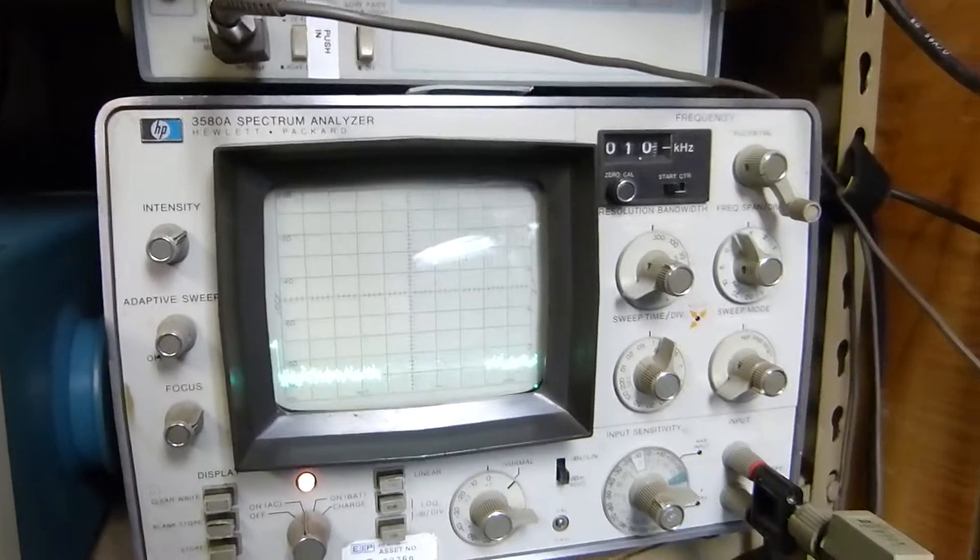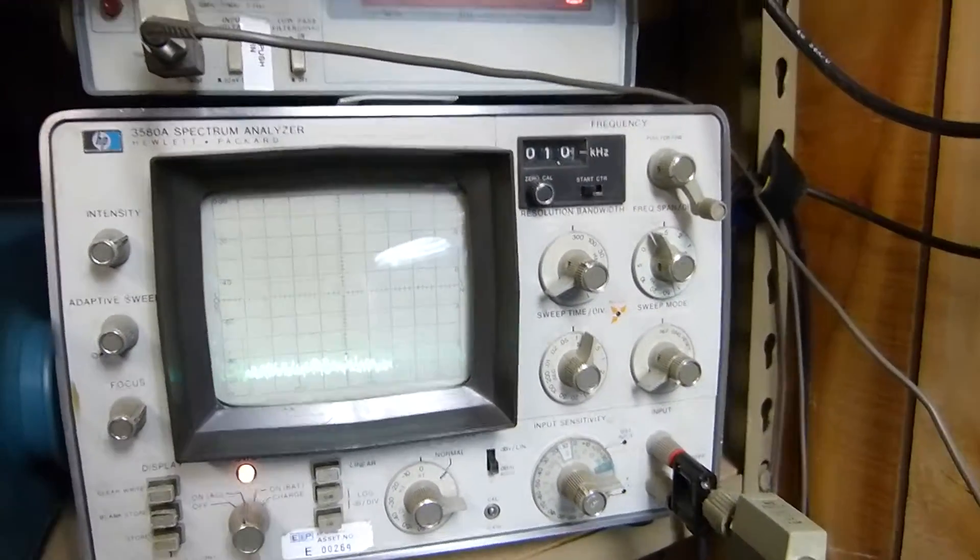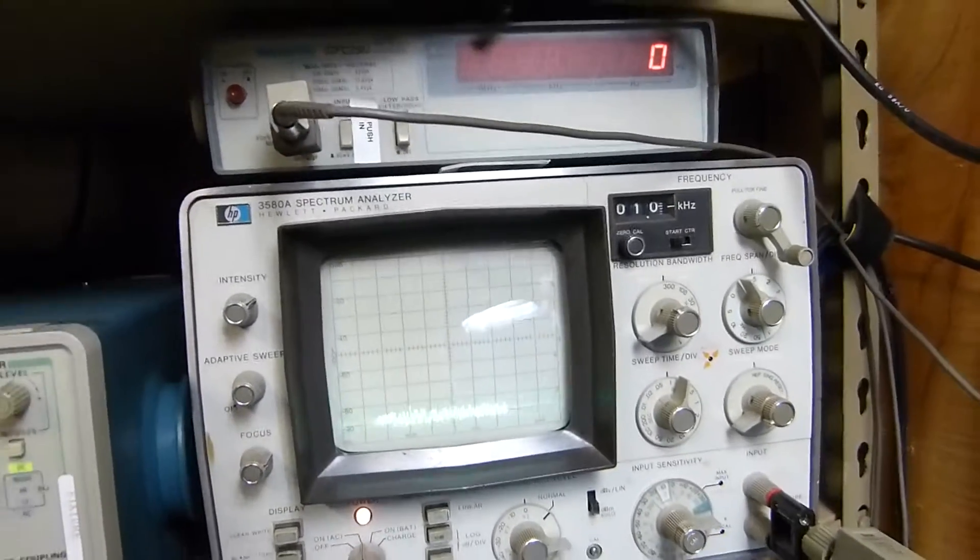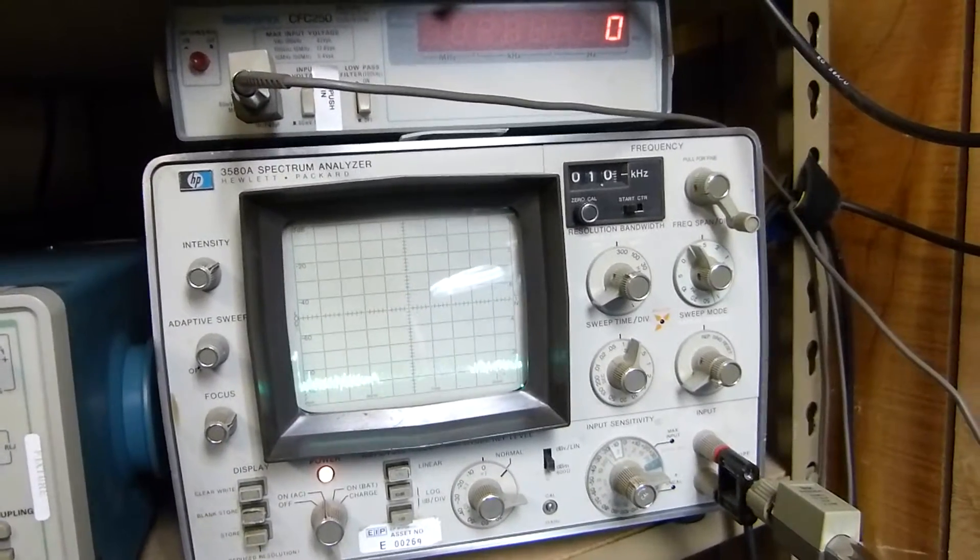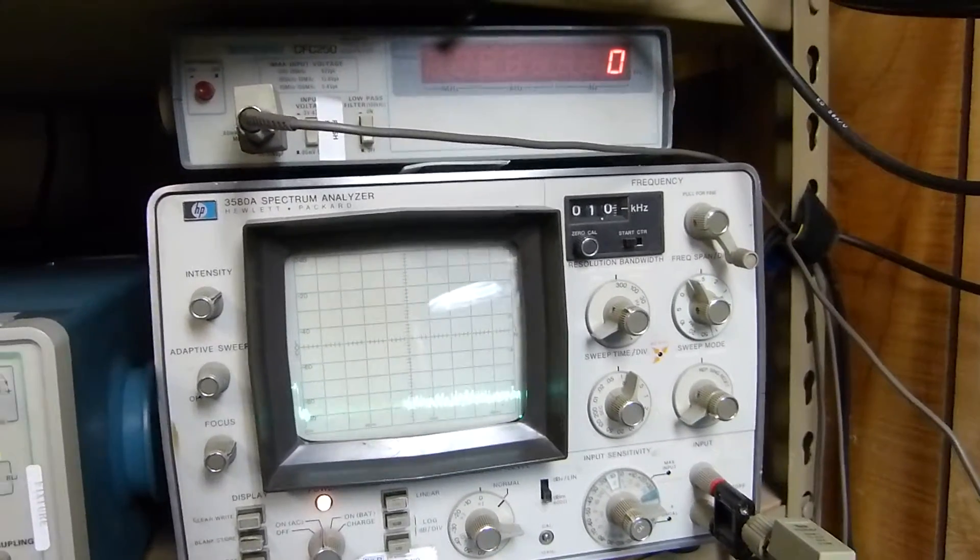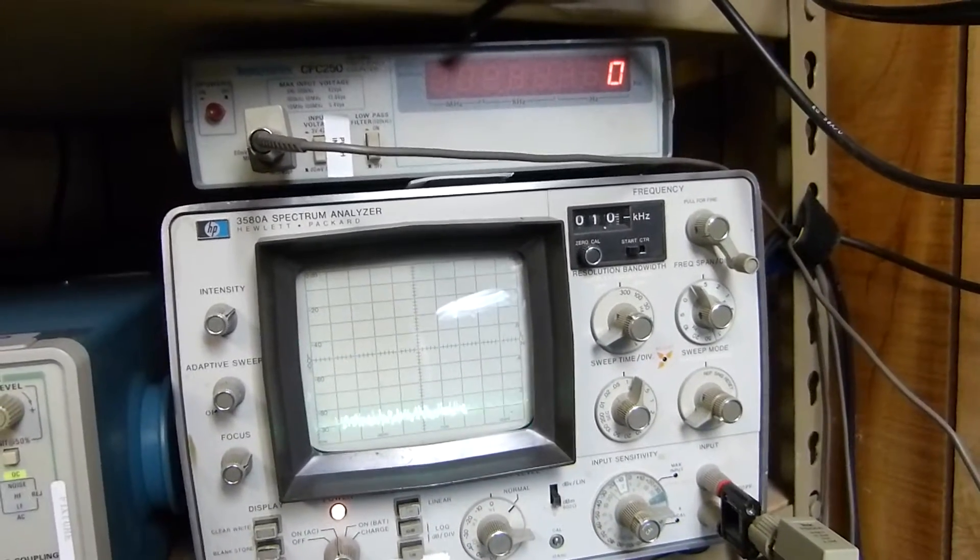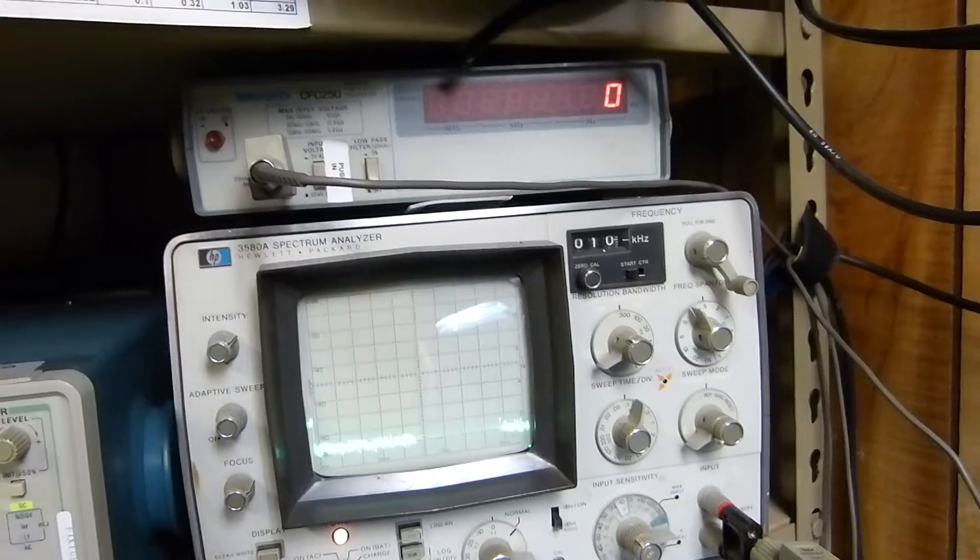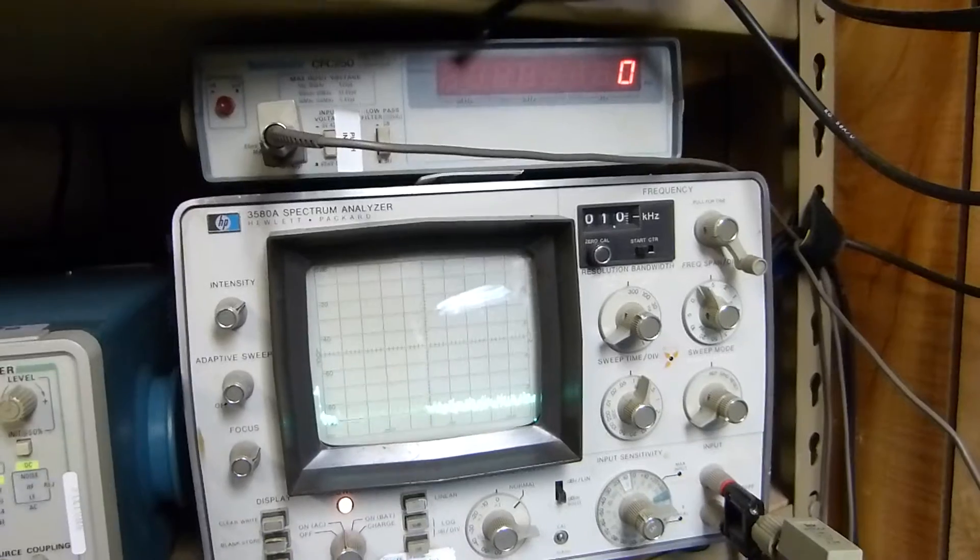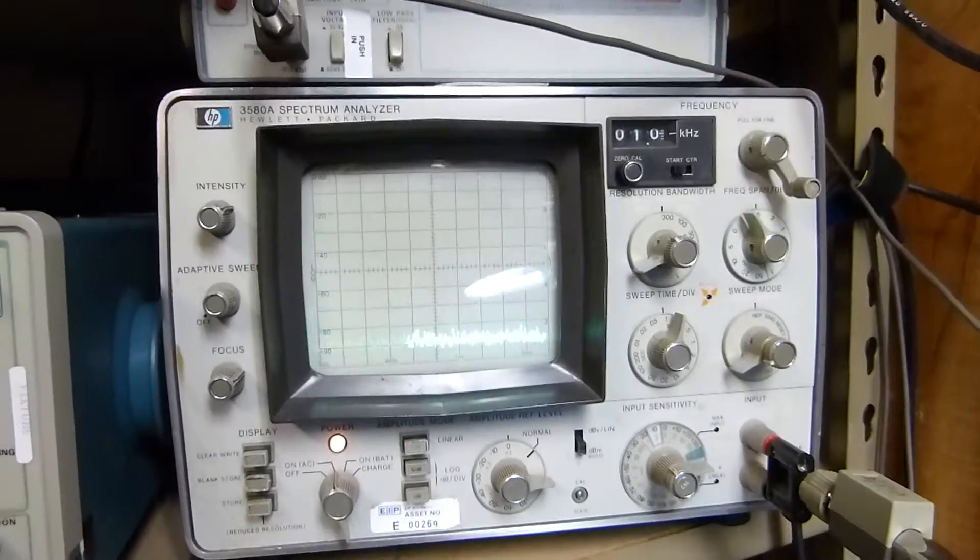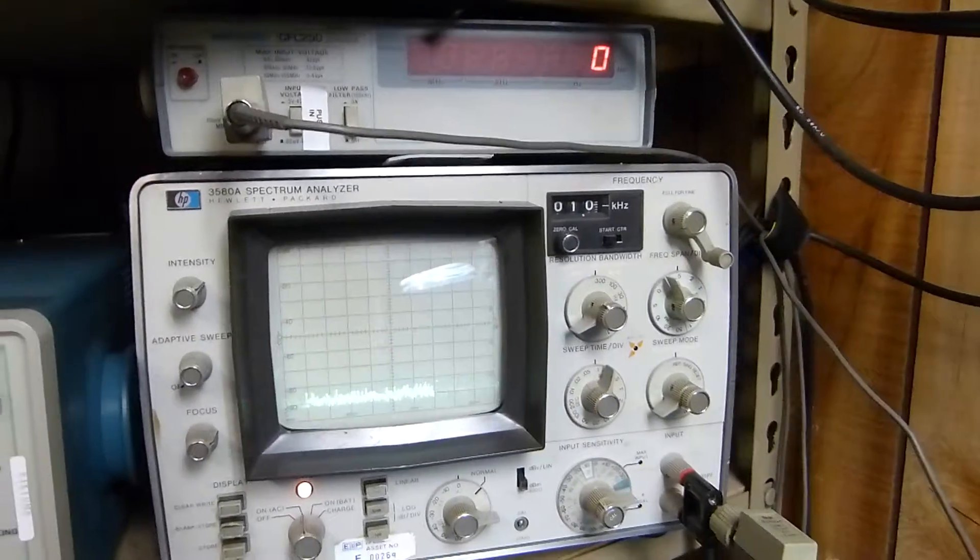There's a couple of really nice Hewlett Packard spectrum analyzers to be bought. This is the 3580A. It goes from 5 Hertz to 50 kilohertz, and this is pretty much the one to have for audio. The one right above it goes from like 20 Hertz to 40 megahertz. They're absolutely beautiful instruments, but I believe this one is the cat's meow for audio work.